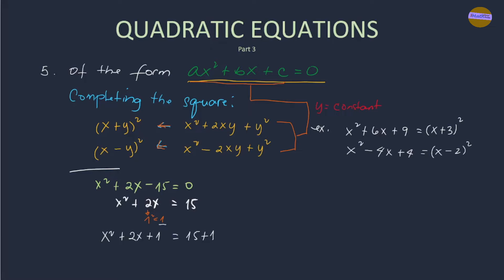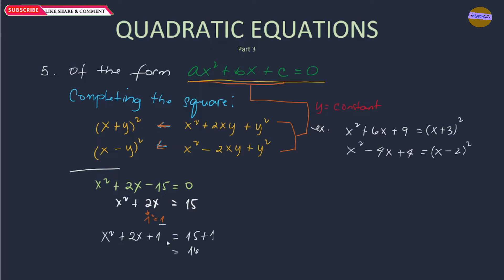We know that 15 + 1 = 16, and 16 is a perfect square of 4, so we don't have a problem on the right side. But on the left side, with our three-term polynomial or trinomial, we need to get the square root of it. If the right side has 16, which is a perfect square, this trinomial should also be a perfect square — because if it's not, there's a problem.